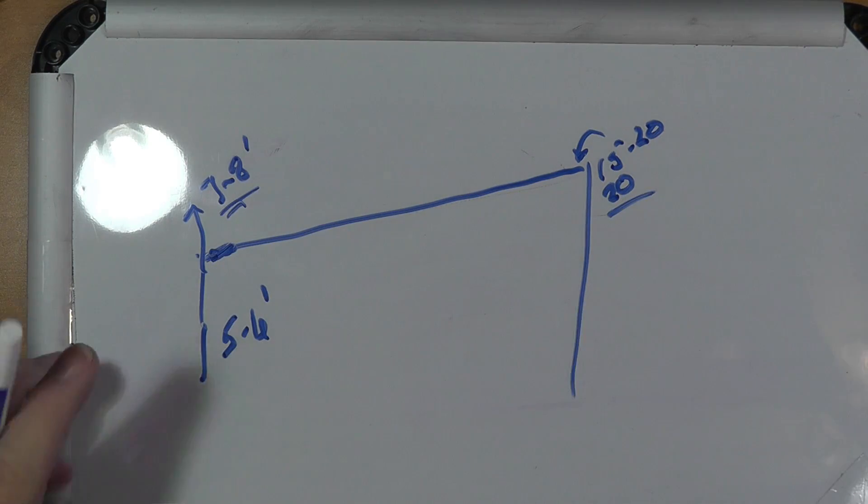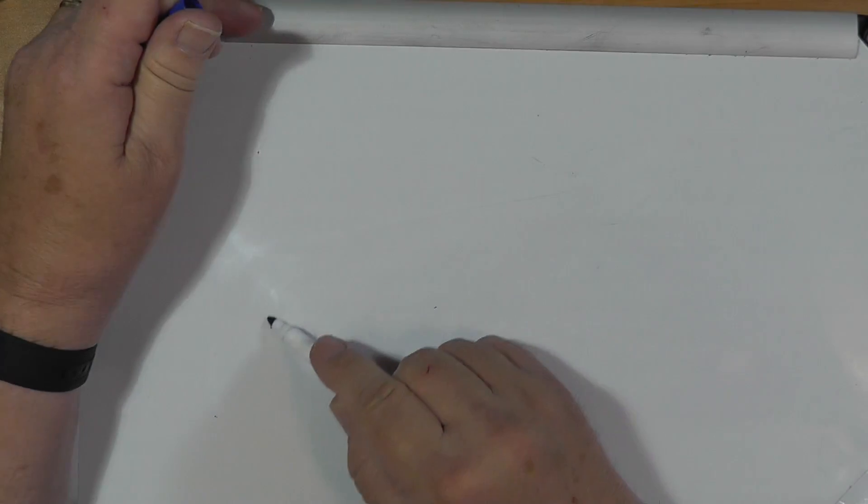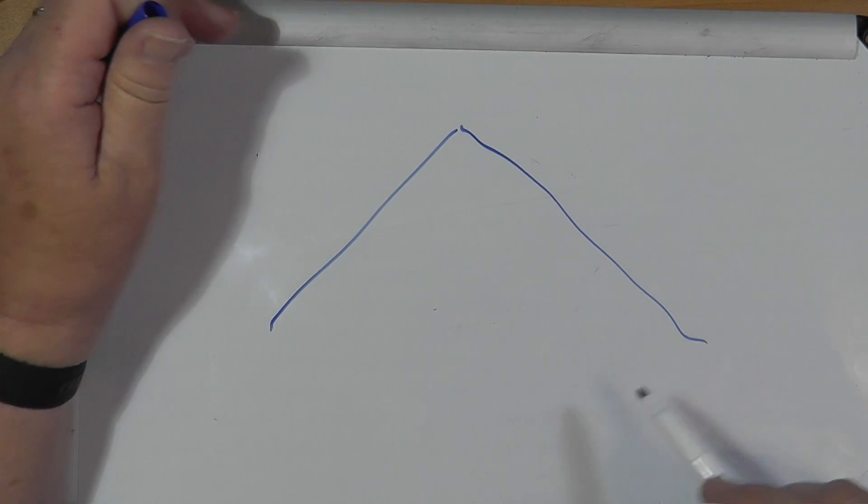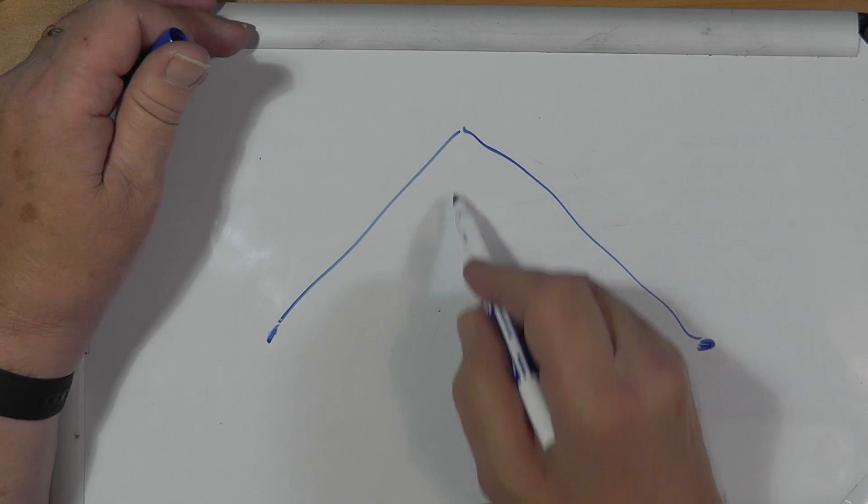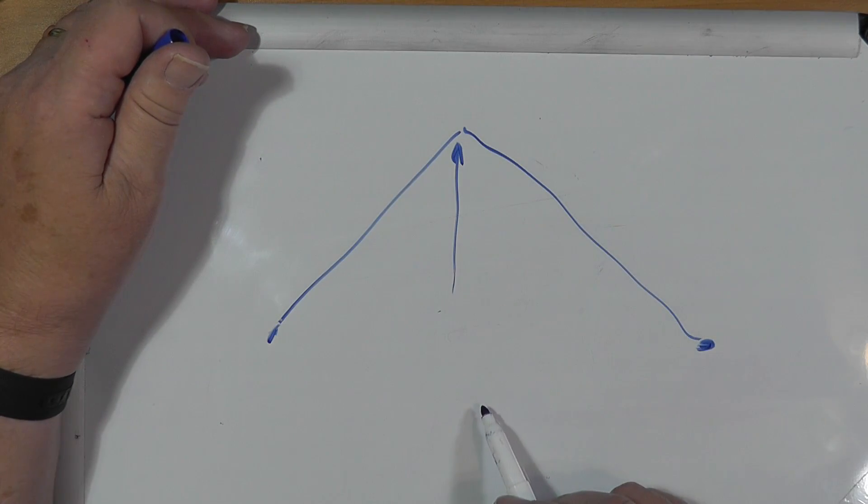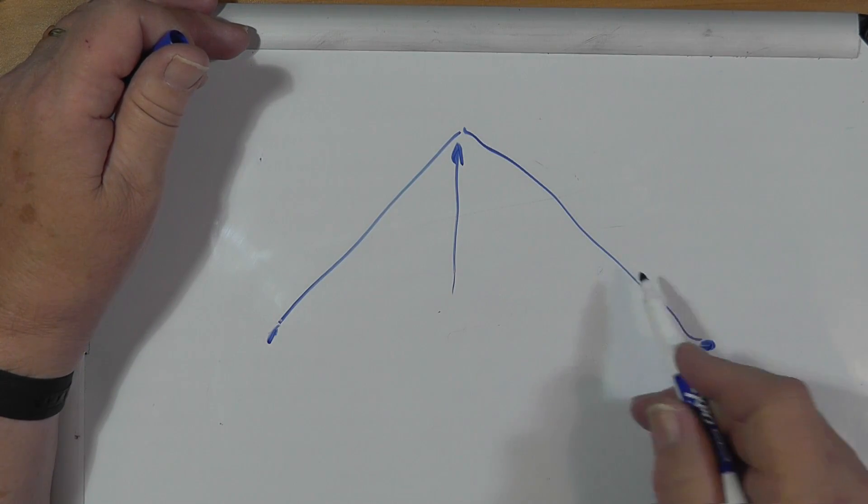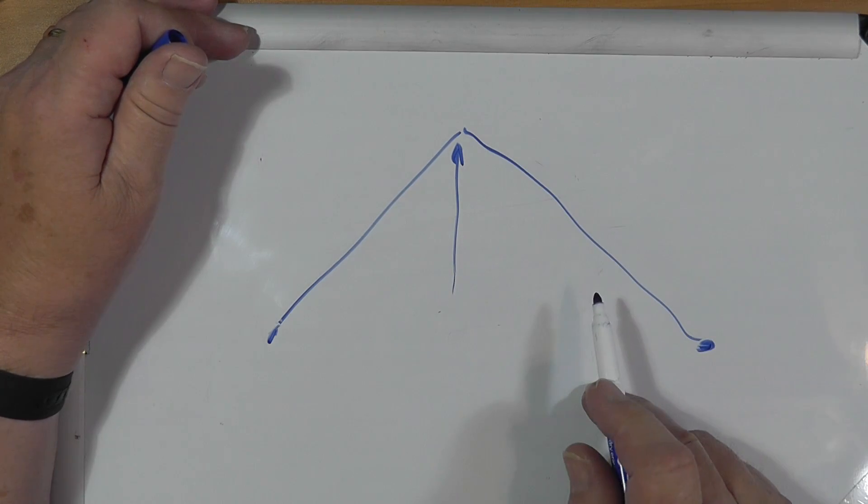Now, in speaking about these end-fed half waves, understand that they are dipoles. You can make an inverted V out of the dipole, feed it down here. Okay. And just a pole, hold it up there. That's a perfectly good inverted V. Remember, it's a dipole.